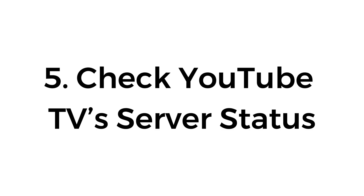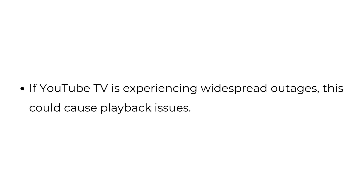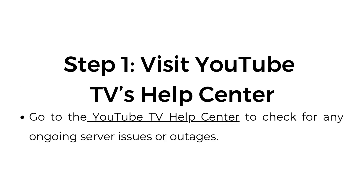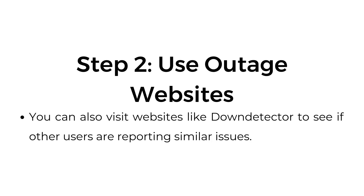Number five: check YouTube TV server status. If YouTube TV is experiencing widespread outages, this could cause playback issues. Visit the YouTube TV Help Center to check for any ongoing server issues or outages. You can also visit websites like Down Detector to see if other users are reporting similar issues.